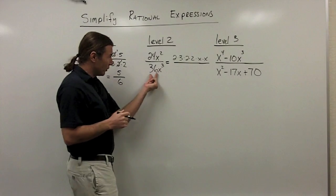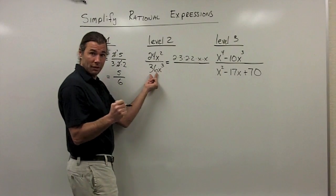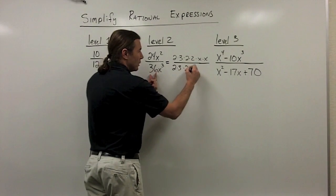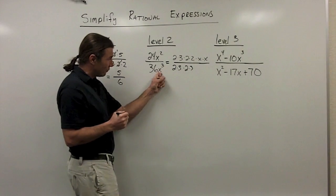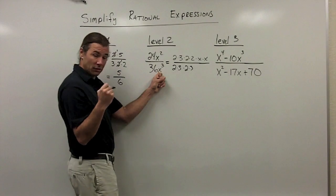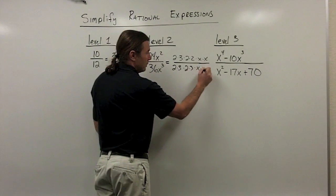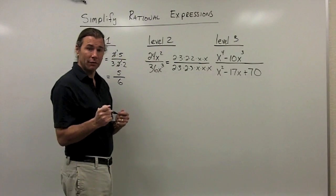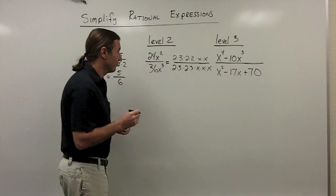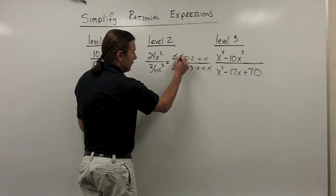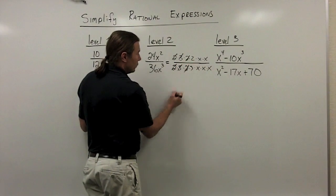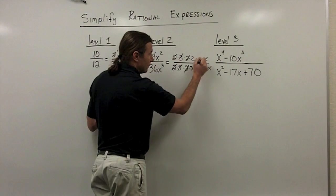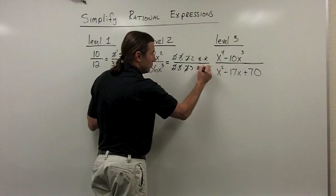Same thing with the denominator. 36 — I'm thinking 6 times 6. Here's 6 as 2 times 3, and then another 6 as 2 times 3. So I've factored 36. And x to the 3rd power means I have 3 of those x factors. So I've got it all factored out. Now I'm going to look to divide out common factors in the numerator and denominator. I have a common factor of 2, a common factor of 3, a common factor of 2, and then looking at the x's, I have 2 common factors of x. So I'm going to divide those out.